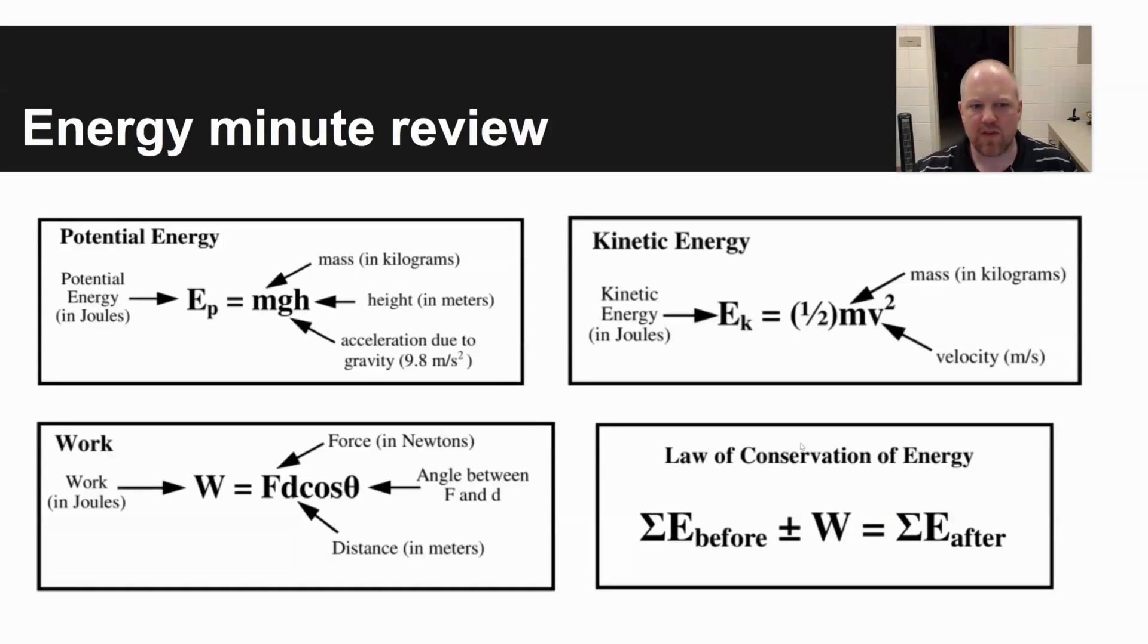Potential energy has to do with objects that are off the ground. Potential energy, or E sub P, is equal to mass times gravity times height. Kinetic energy is energy in motion, and if an object is moving, it has kinetic energy. E sub K, kinetic energy is equal to one half times mass times velocity squared.